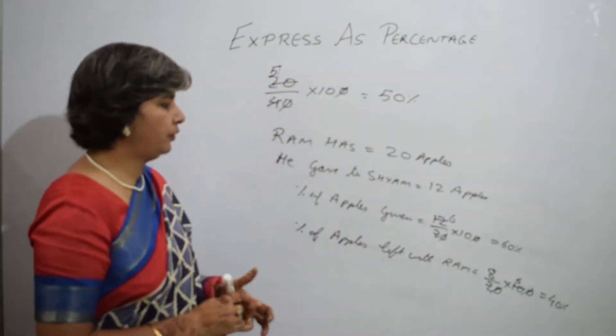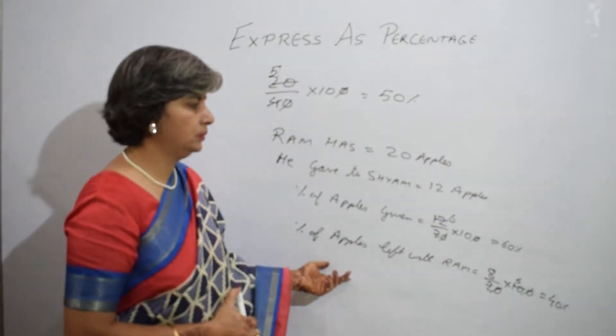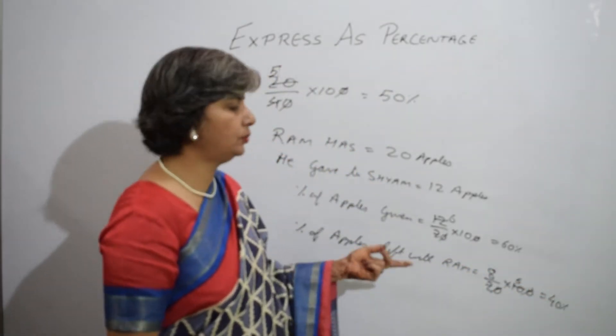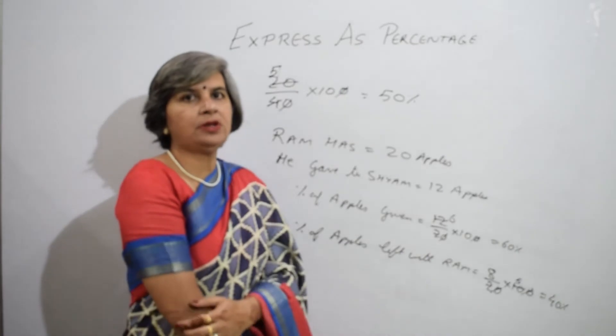So, he is left with 40 percent of apples. If I see 60 percent and 40, if I add these two, I get 100. So, this is how we calculate.